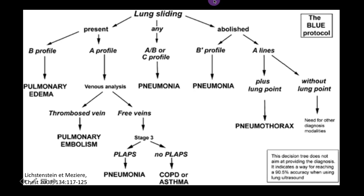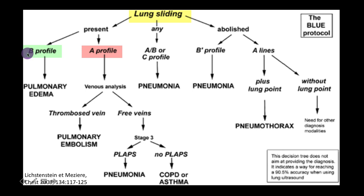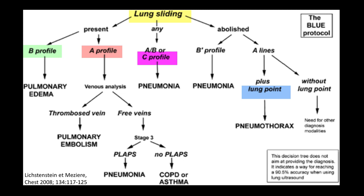The first step is to assess whether there is presence of lung sliding. Once its presence has been established, we need to be able to assess for the presence of A lines, B lines, consolidation, or lung point — the point where non-sliding lung begins to slide. Let's go over these findings individually as well as the other lung ultrasound finding of pleural effusion.